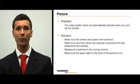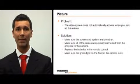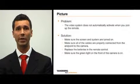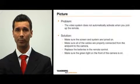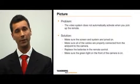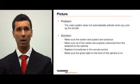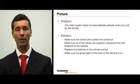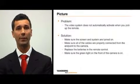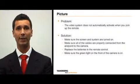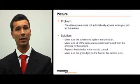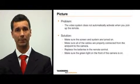If the video system does not automatically activate when you pick up the remote control, make sure the screen and system are turned on. Next, make sure all of the cables are properly connected from the end point to the camera. Also, you may want to try replacing the batteries in the remote control. Finally, make sure there is a green light on the front of the camera.